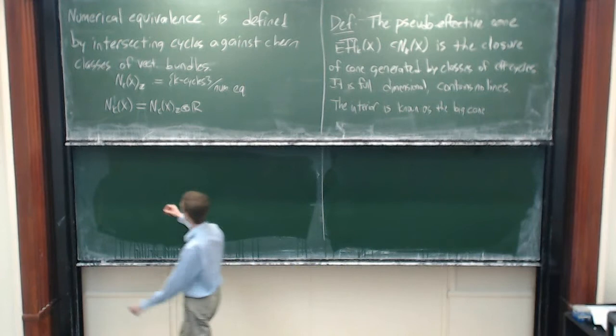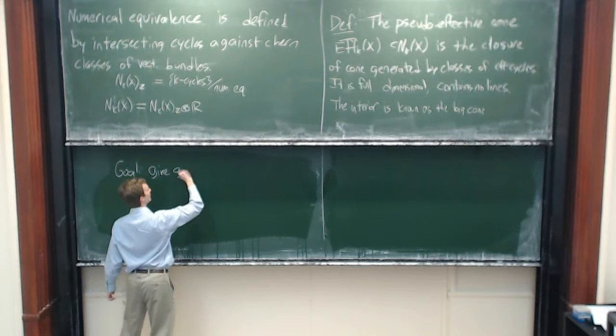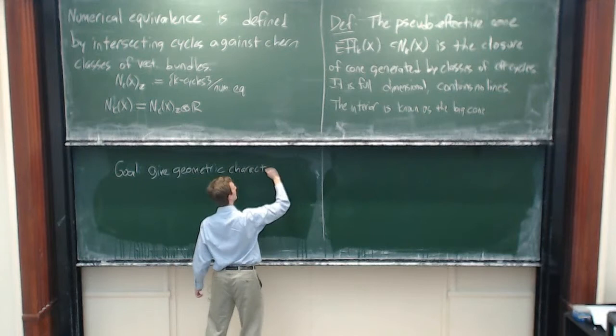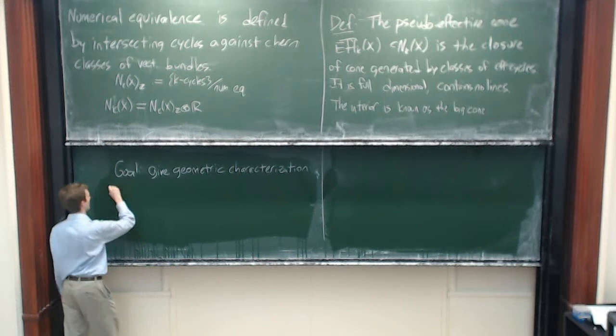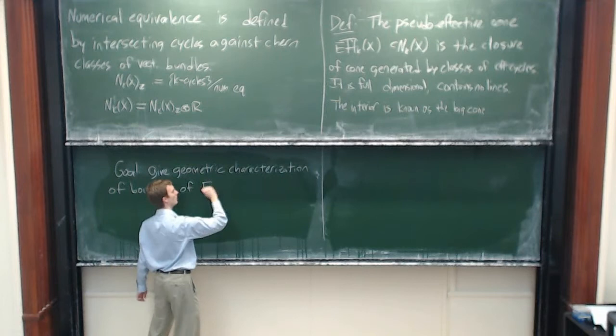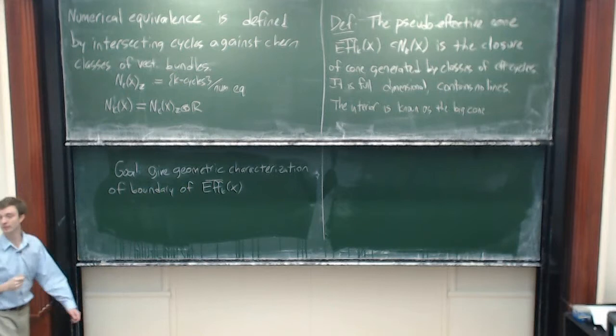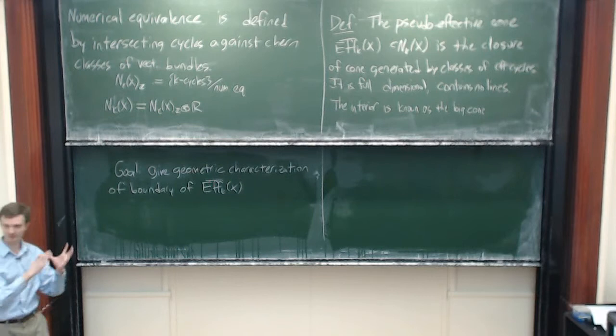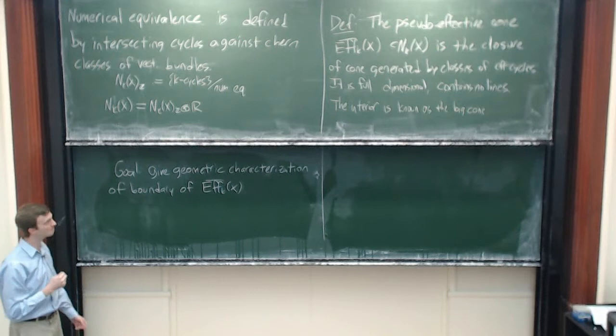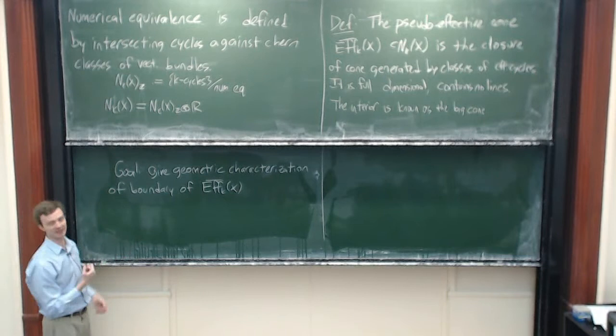The basic goal of this talk is the following: we'd like to give a geometric characterization of the boundary of the pseudo-effective cone. The cone is convex because we took classes of generators and closed them off, making it a convex cone. It's just a convex closed pointed cone inside of a vector space — very natural.